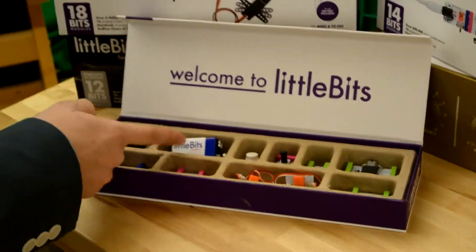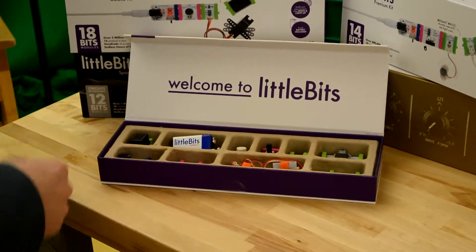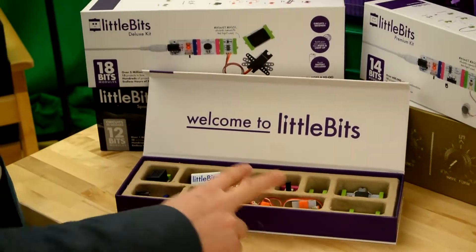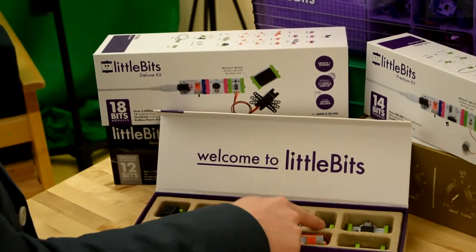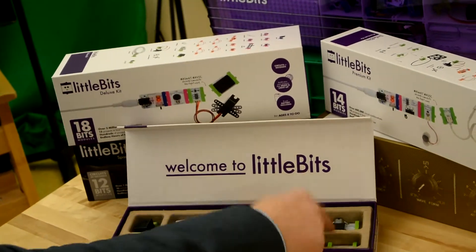So we have everything from a battery, a buzzer, a power pack, a light sensor, a couple of wires, a button, a dimmer, an LED, a bar graph LED, and a motor.